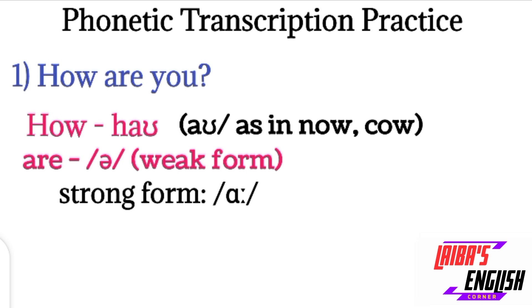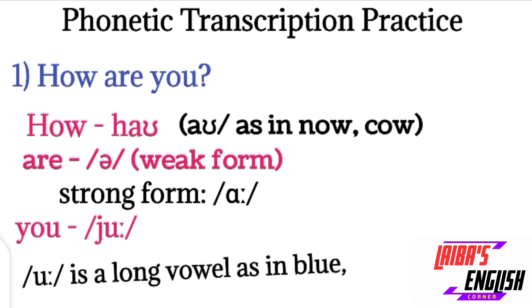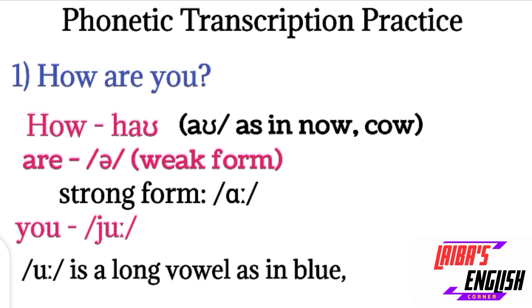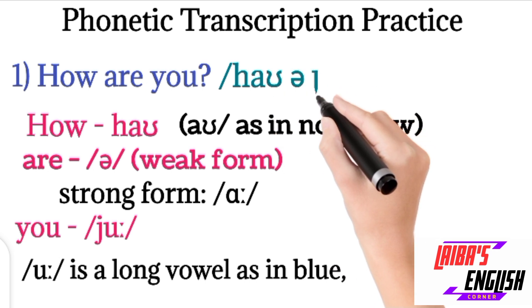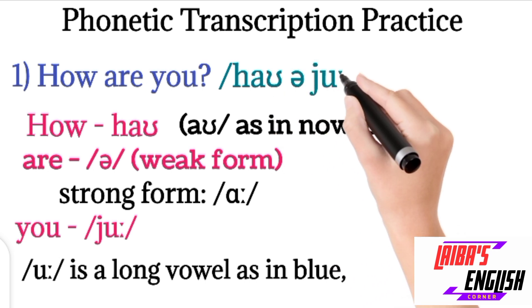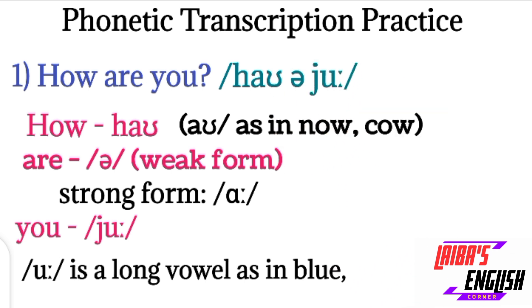'Are' will be represented by the schwa sound. How are you? In 'you,' there is the 'j' sound and a long 'oo' sound. How are you? This is the transcription of the first sentence. Pause the video and write it in your notebook — it will be helpful for you.